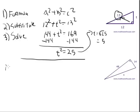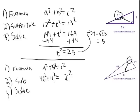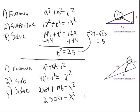One more problem. Step one: write the formula — a squared plus b squared equals c squared. Step two: substitute. The hypotenuse is x — it's the largest side and opposite the right angle. So 48 squared plus 14 squared equals x squared. 48 squared is 2304, 14 squared is 196, so x squared equals 2500. x equals the square root of 2500, which is 50.